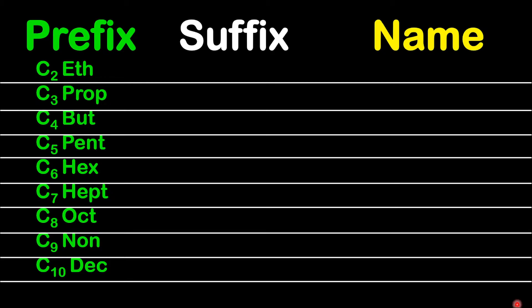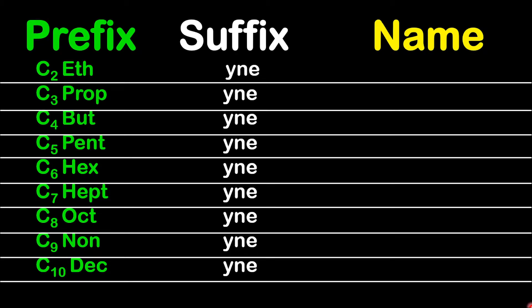Remember, for double bonds and triple bonds, you can only start at the second carbon — because a double bond or triple bond can only exist between two carbons, so a single carbon cannot have a double bond. The suffix for alkynes is -yne.